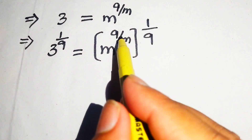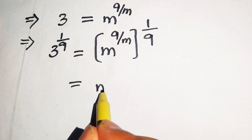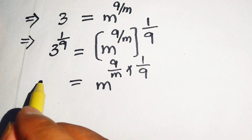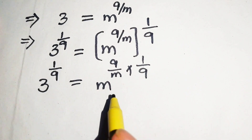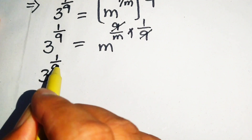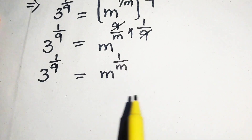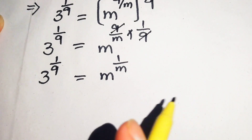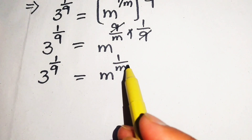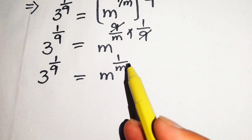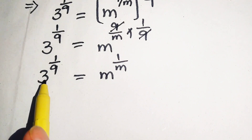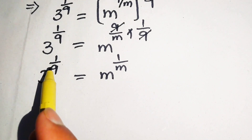According to the exponential law, we multiply the two exponents: 9/m × 1/9. This 9 cancels with this 9, giving us 3^(1/9) = m^(1/m). Notice on the right hand side, the base is m and its exponent is the reciprocal of the base. We need to create the same condition on the left hand side.